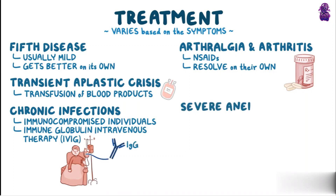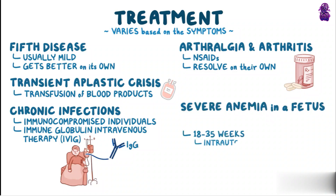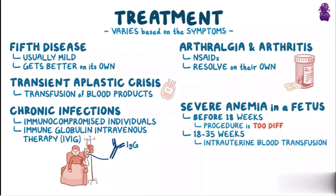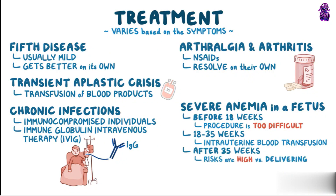Severe anemia in a fetus between 18 and 35 weeks of gestation can be treated with an intrauterine blood transfusion. Before 18 weeks, the procedure is too difficult technically. After 35 weeks, risks of transfusion are high compared to simply delivering the baby.